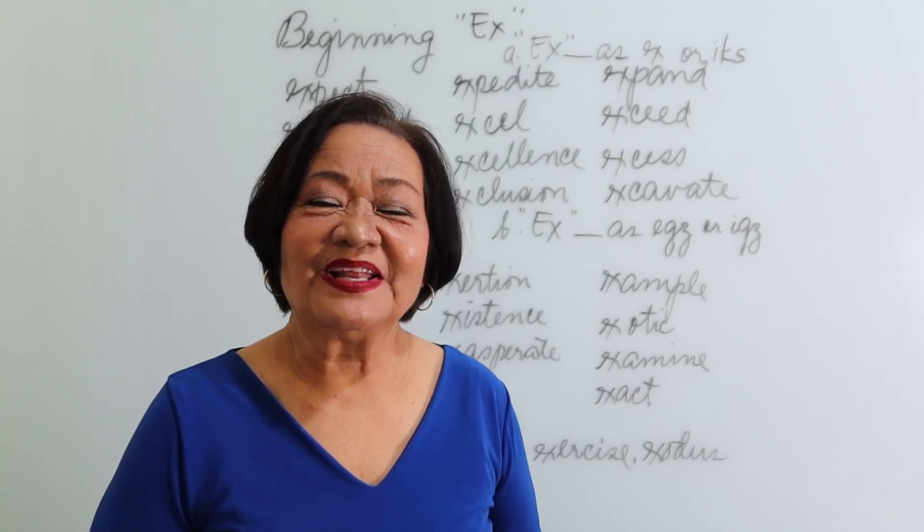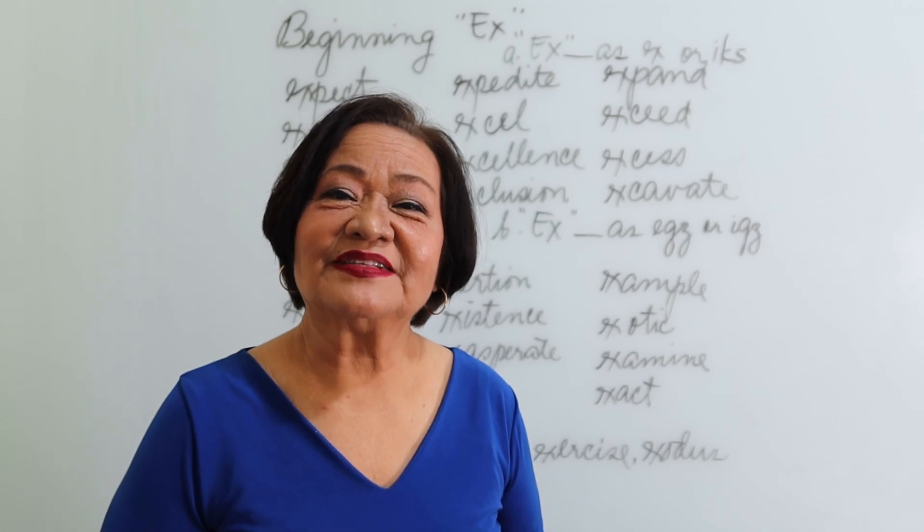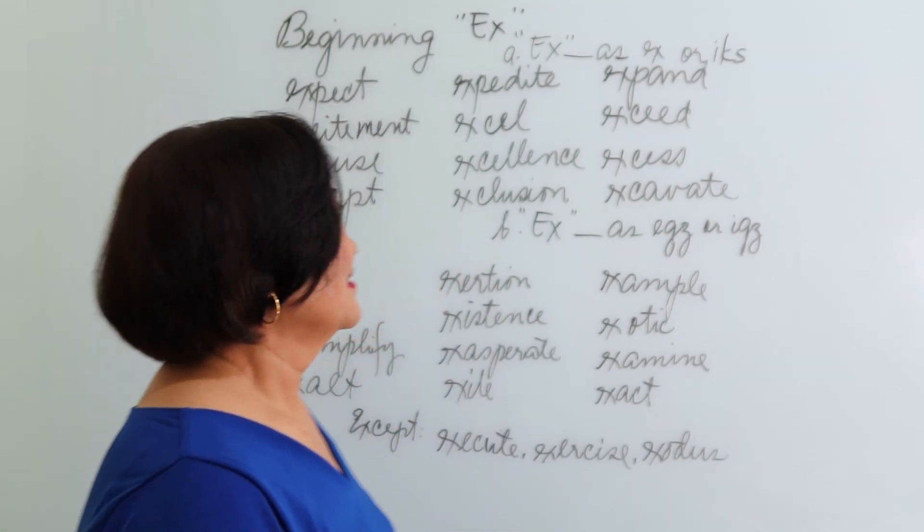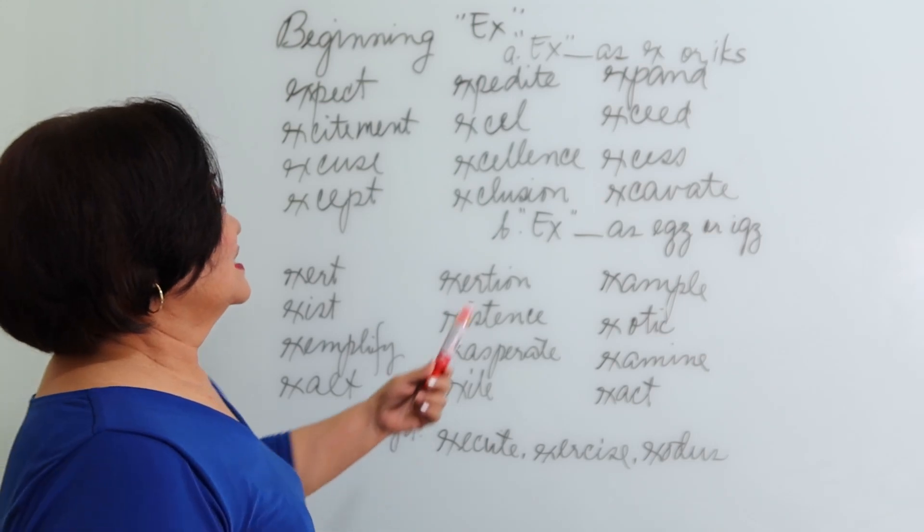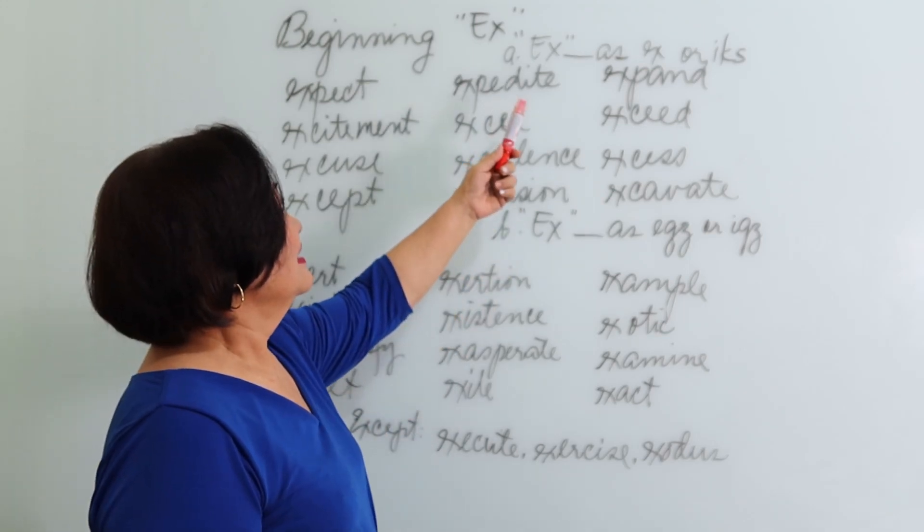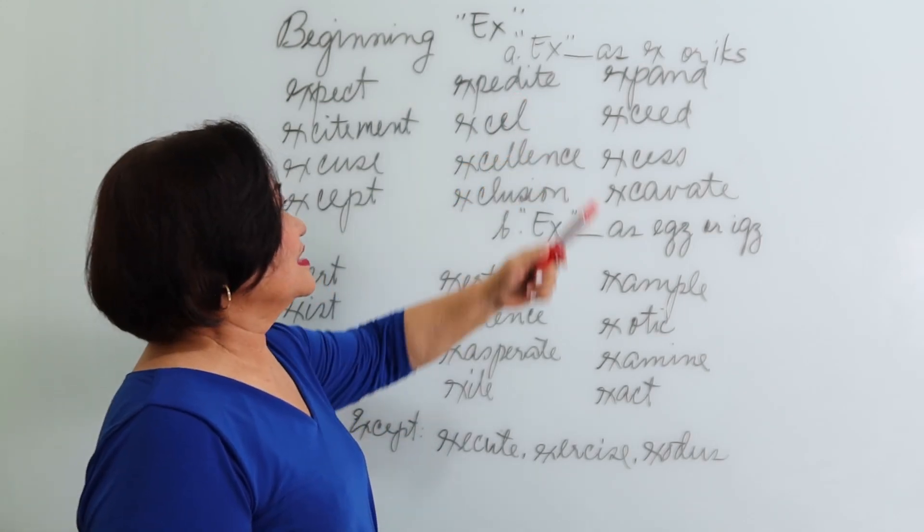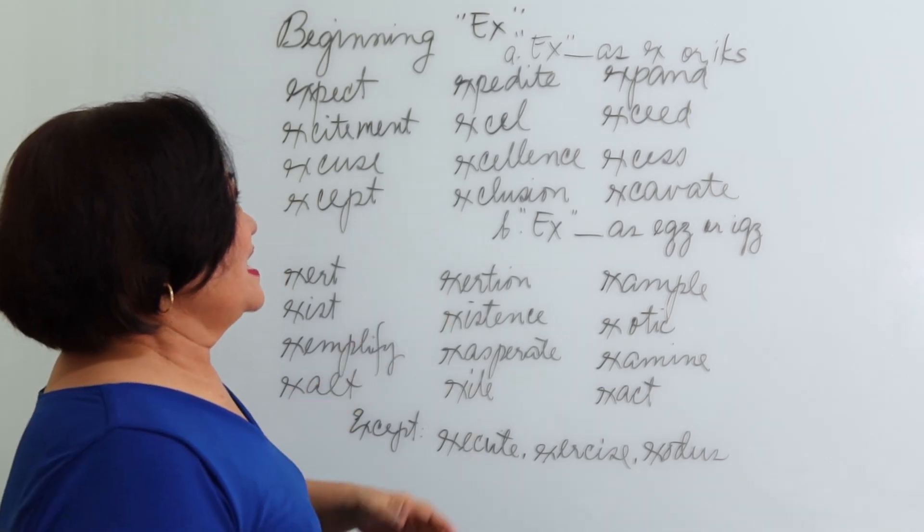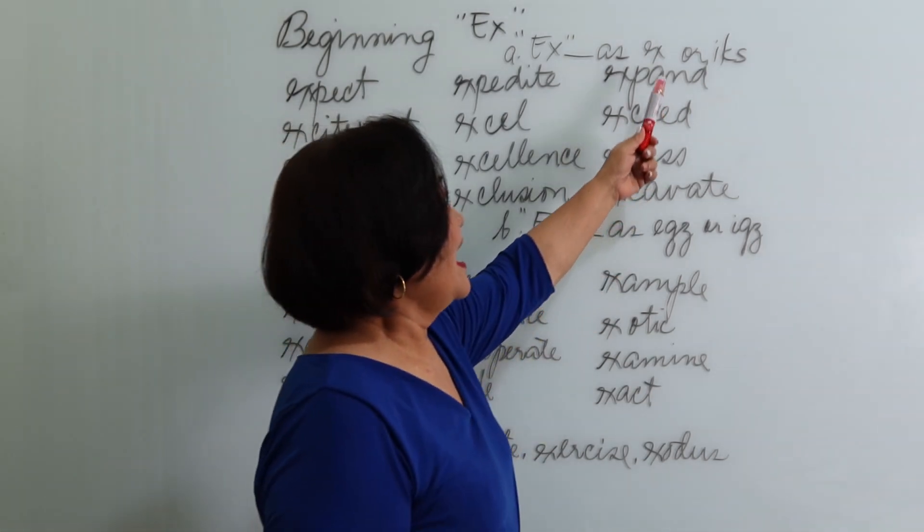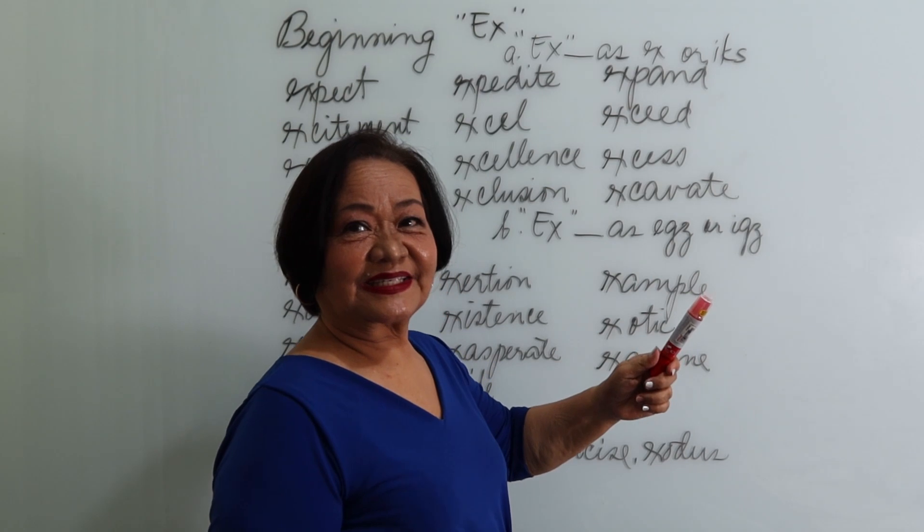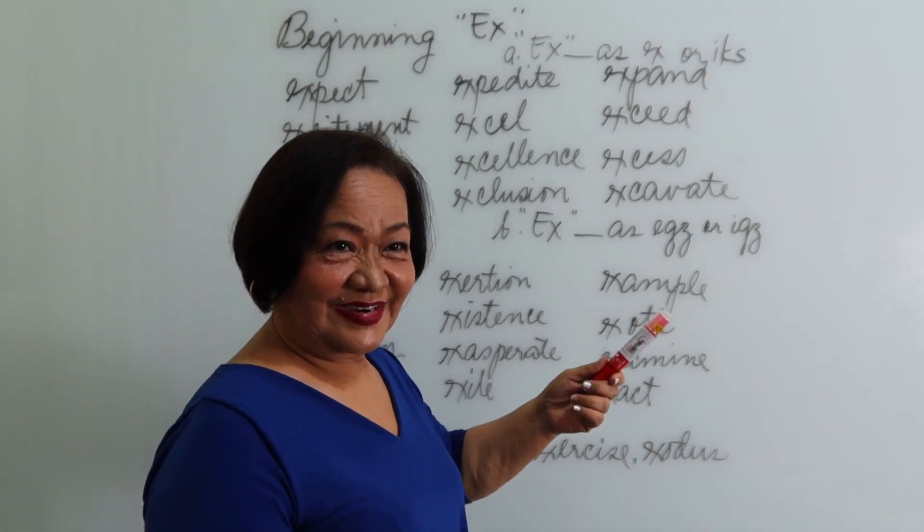This time, let's have a practice on the syllable EX. When the EX is followed by a consonant, you read EX as X or X. Okay, let's try.